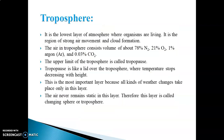Troposphere — it is the lowest layer of the atmosphere where organisms are living, i.e. human beings and other animals. It is the region of strong air movement and cloud formation. The air in the Troposphere consists of 78% Nitrogen.